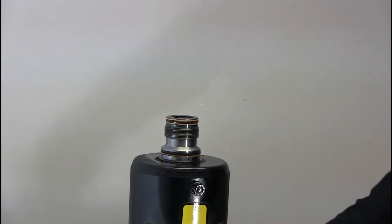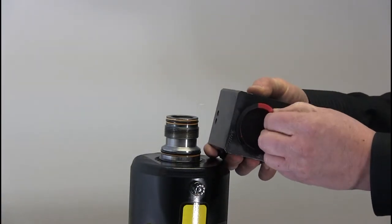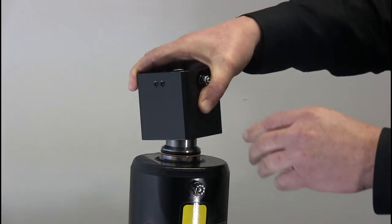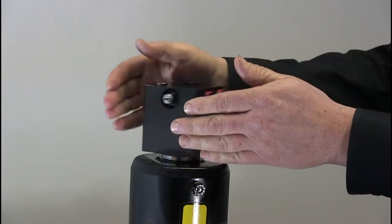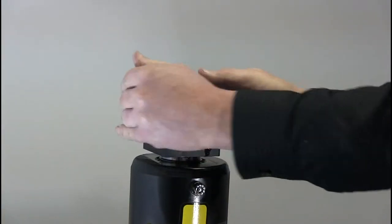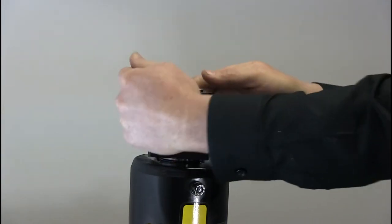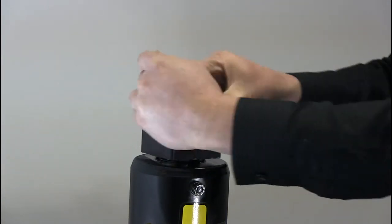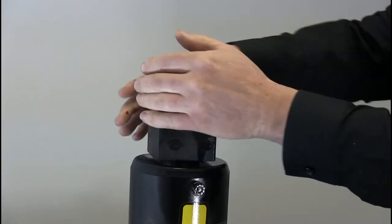We are now going to install the valve block. Remove the plug in the bottom of the block assembly. And then screw it on to the jack leg until it is fully seated. Use the wrench to torque it to approximately 100 foot pounds.